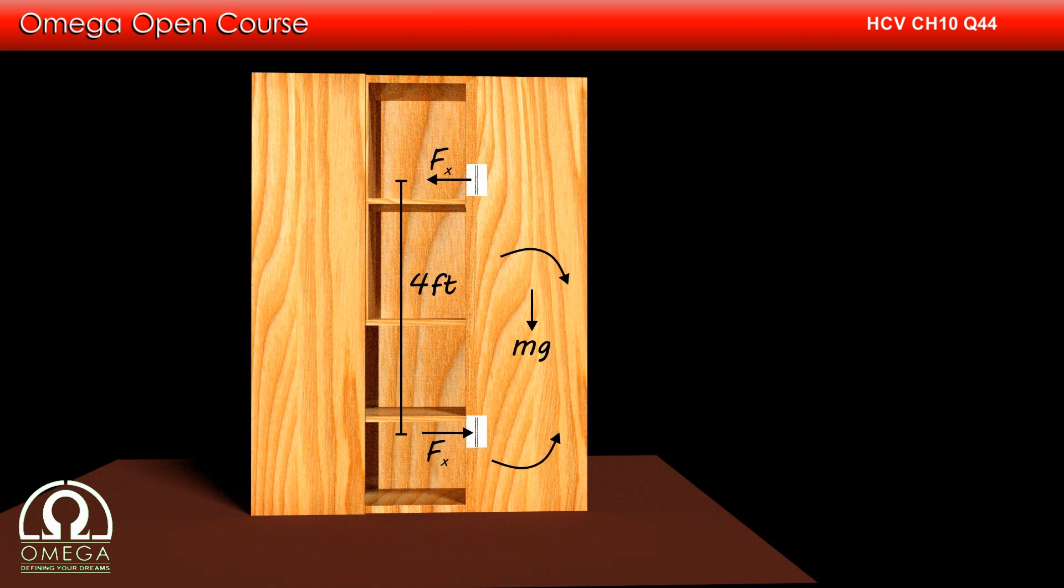As per the question, the magnitudes of the forces exerted by the hinges are equal and we have seen that their horizontal components are equal. Therefore, their vertical components must also be equal. Let the vertical component of the forces by each of the hinges on the door be Fy.